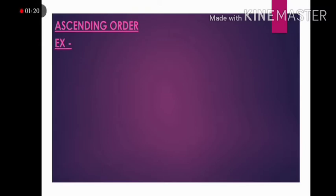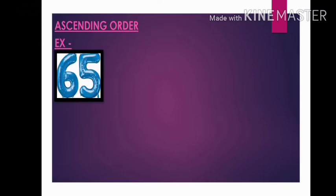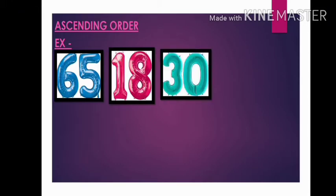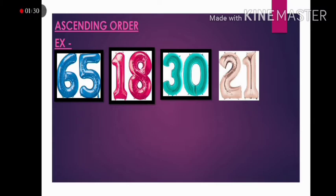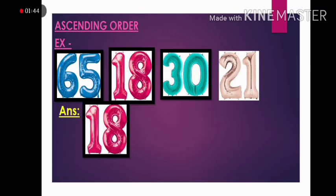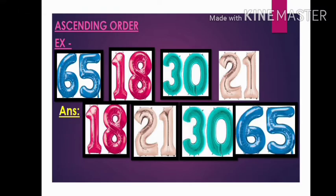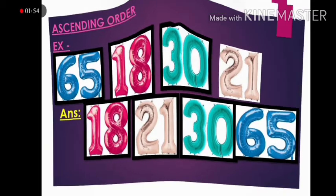Let us take one more example of ascending order. Let us take some numbers like 65, 18, 30 and 21. Let us arrange them in increasing order. We will take the smaller number first which is 18 then 21 then 30 and then 65. All the numbers are in increasing order.